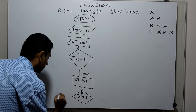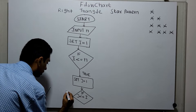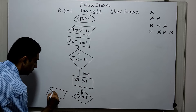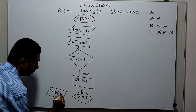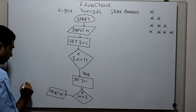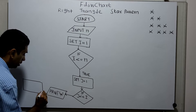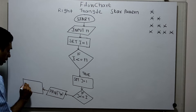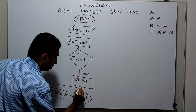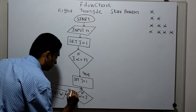If the inner condition is true, I am printing a star. Then I am incrementing j by 1 — j equal to j plus 1 — and connecting back to the inner loop condition check: if j less than or equal to i is true, we continue printing.